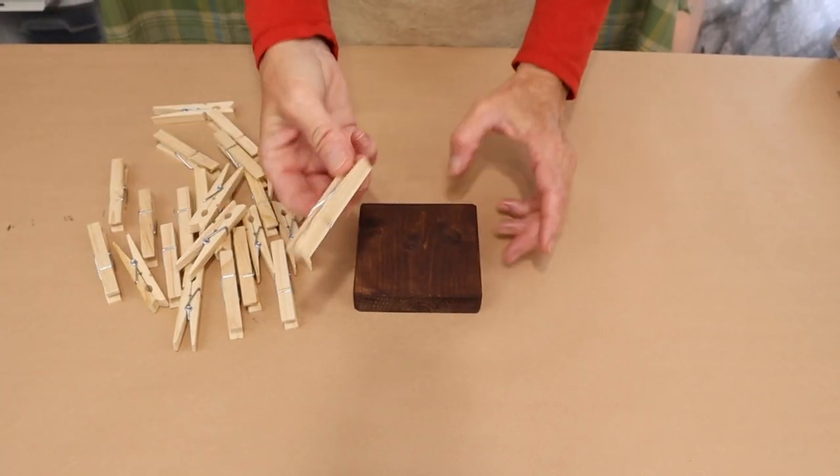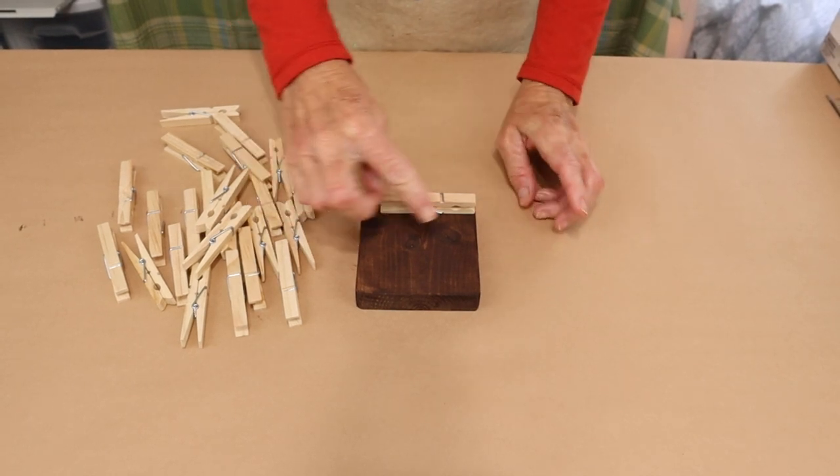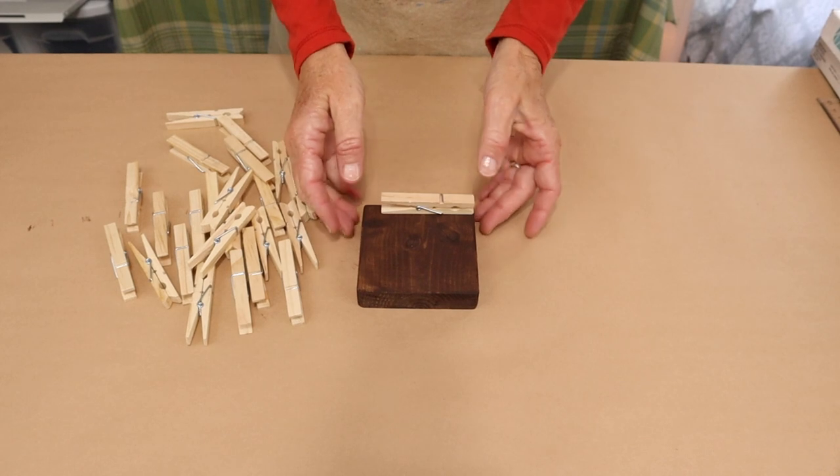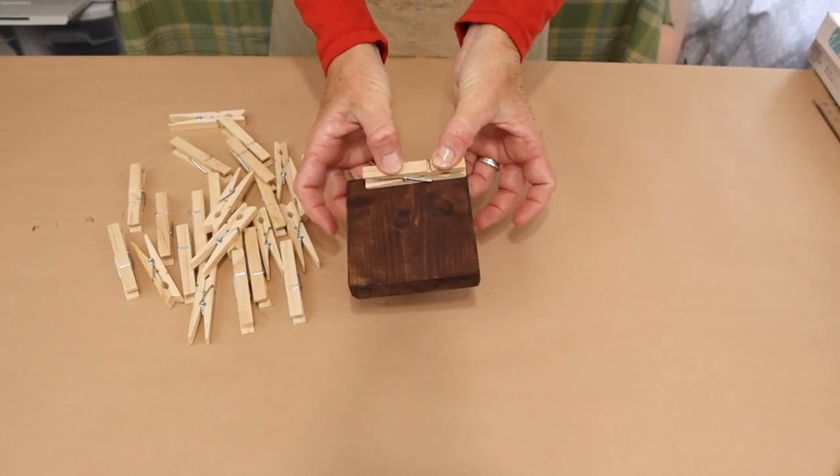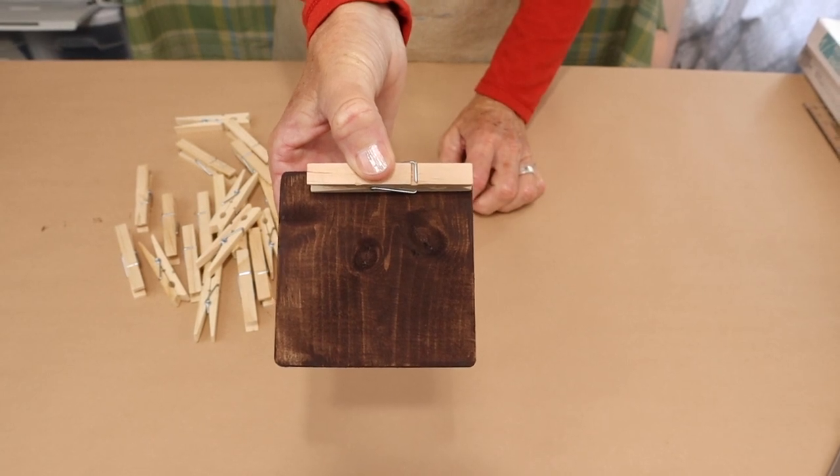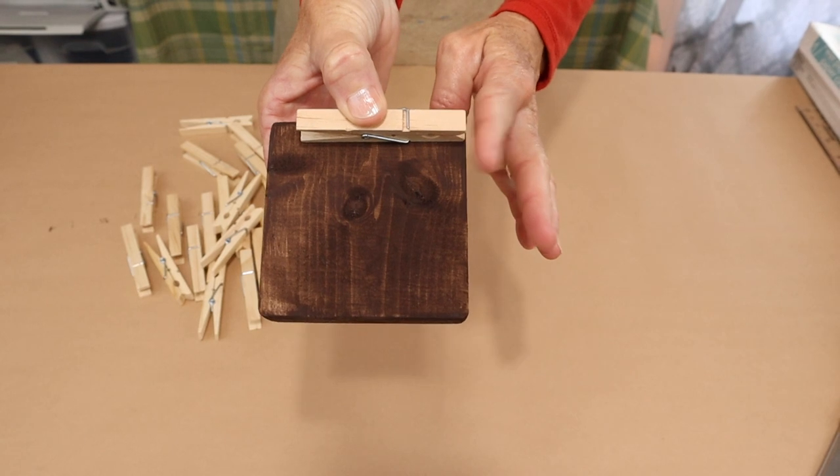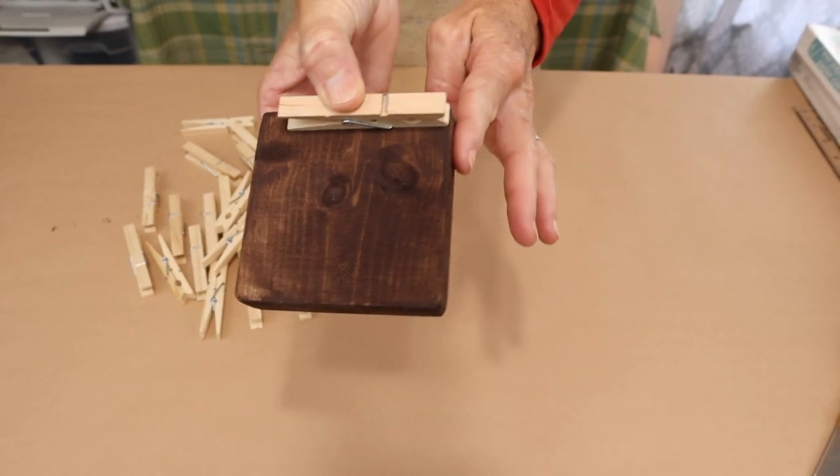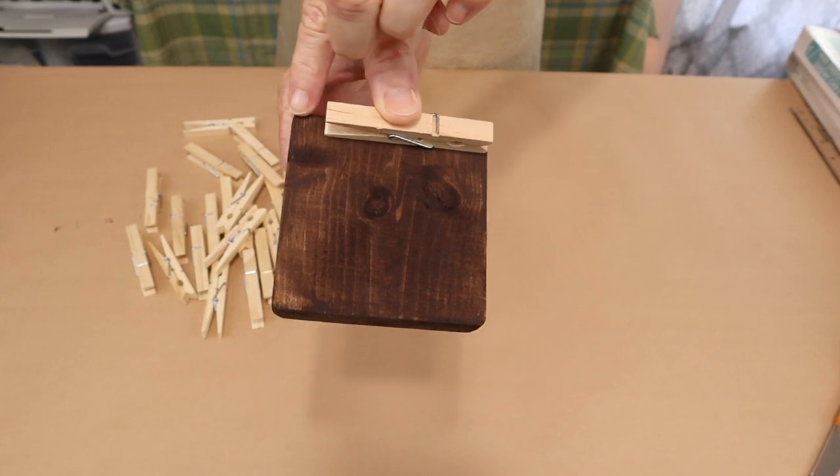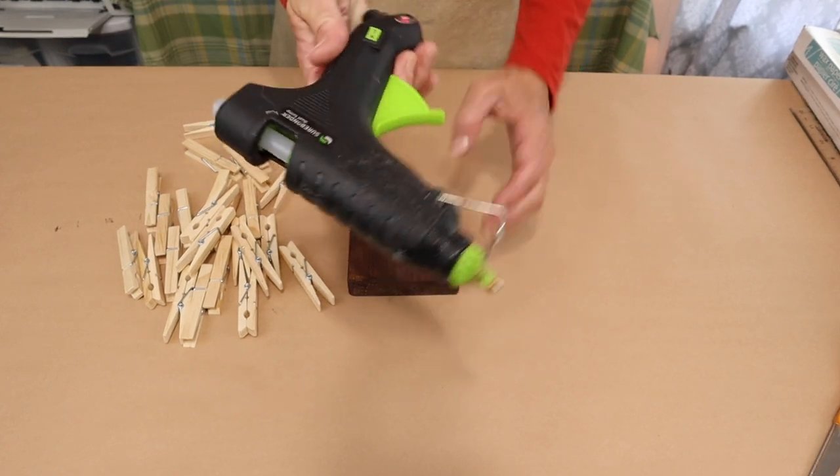And how we want to do this is we're going to stack them on top of each other. But to get a complete finished edge, you'll start by offsetting your first row of clothespins. You'll put the clothespin end touching this side, even with this side. And then this side, you're going to leave a little gap there. And to do this, I'm going to be using a glue gun.